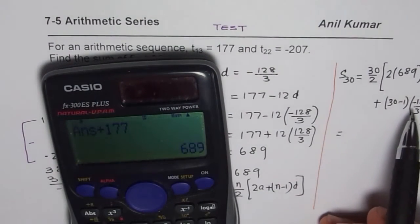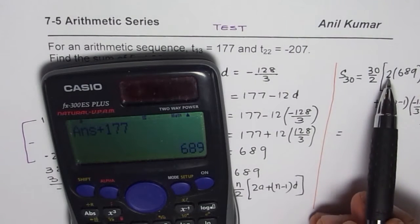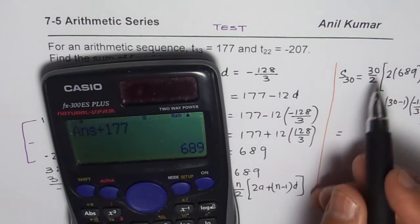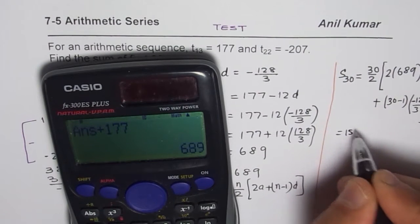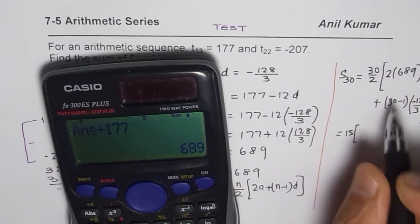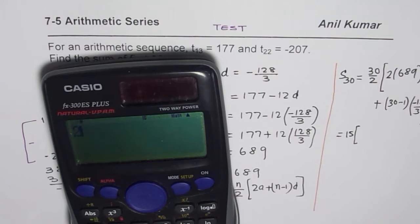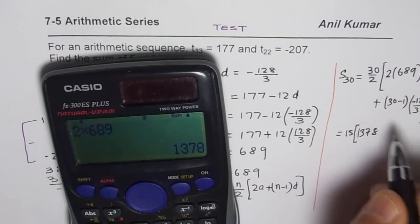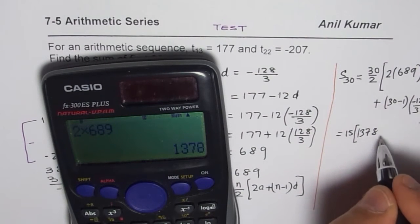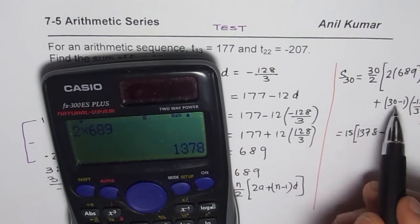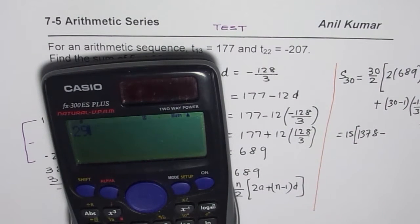We'll do this in steps. 30/2 = 15. Then 2×689 = 1378. Then we have 29 times (-128/3), so 29×128, then divided by 3.